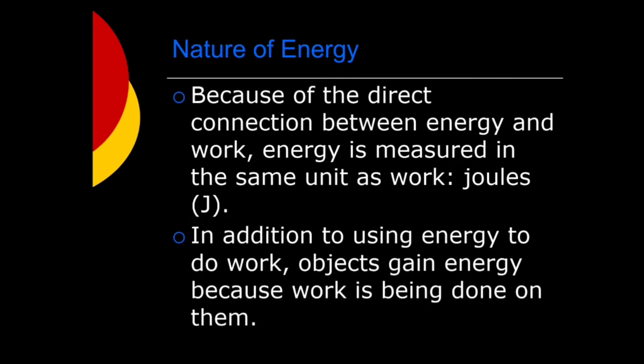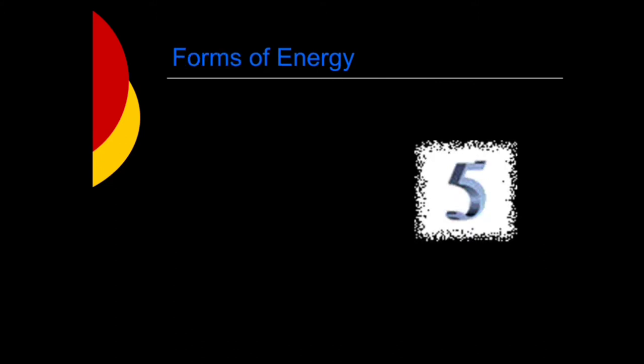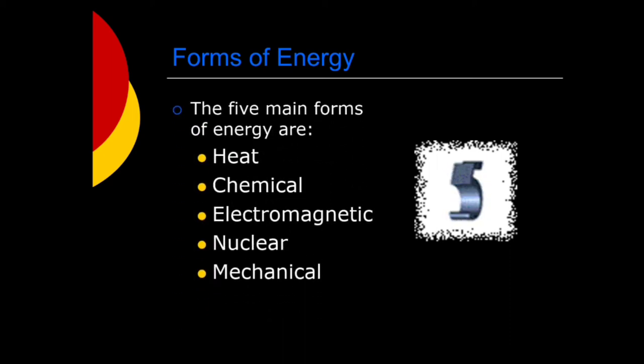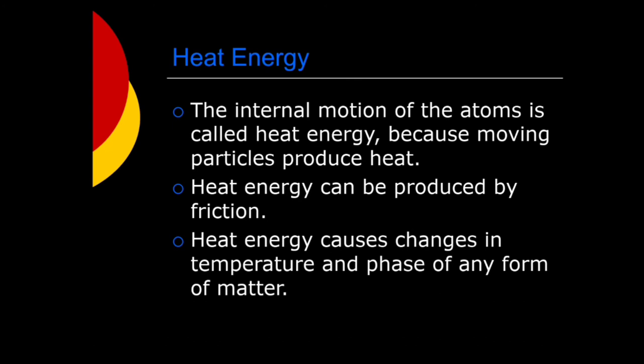If an object or organism does work, the object or organism uses energy. Because of the direct connection between energy and work, energy is measured in the same unit as work, that is joules. In addition to using energy to do work, objects gain energy because work is being done on them. Now, here there are five forms of energy.